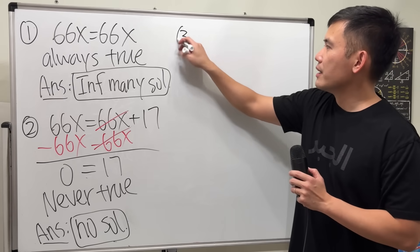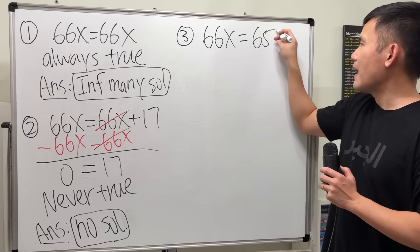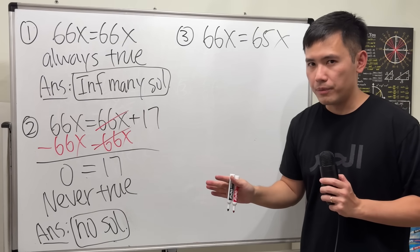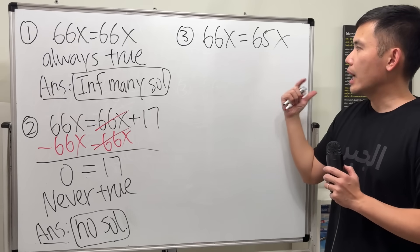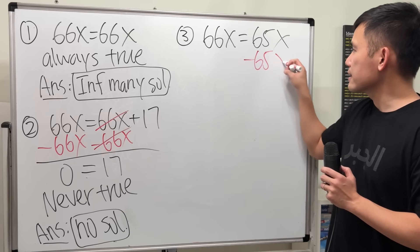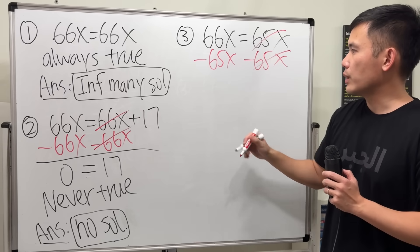Now here is another situation. Let's say I'm giving you 66x equals 65x. Now the left-hand side and right-hand side are not the same anymore. How do we solve for x? Well, let's subtract 65x from both sides, so we can put all the terms with x together on one side.